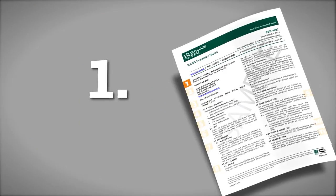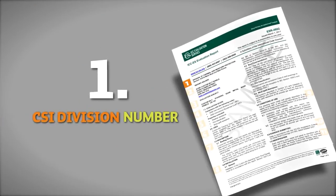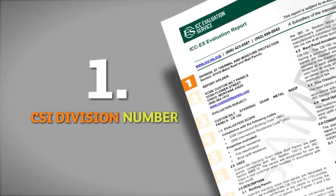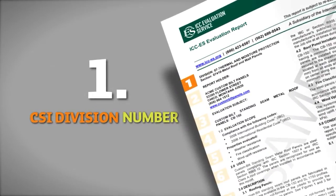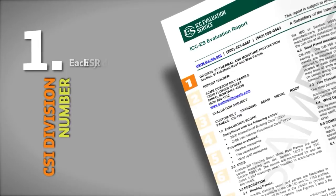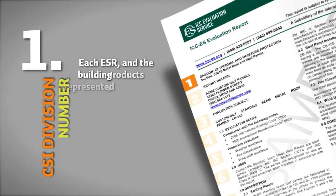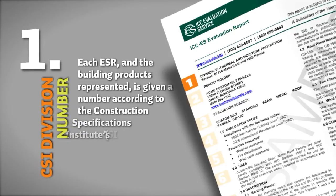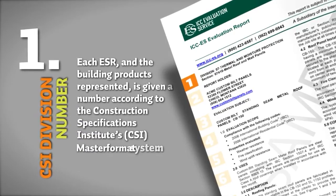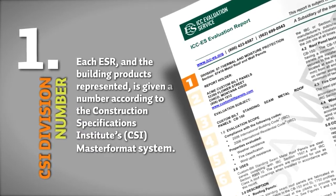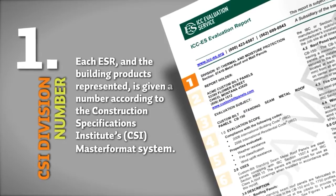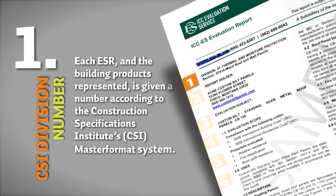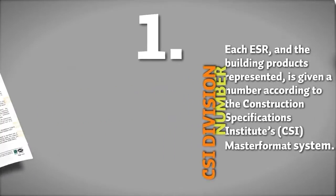1. CSI Division Number. ICC ES Evaluation Reports begin with administrative details. Each report, and the building products represented in it, is given a number according to the Construction Specifications Institute's CSI Master Format System, which can also be used to search for similar reports on the ICC ES website.